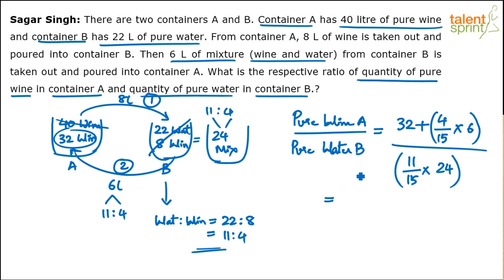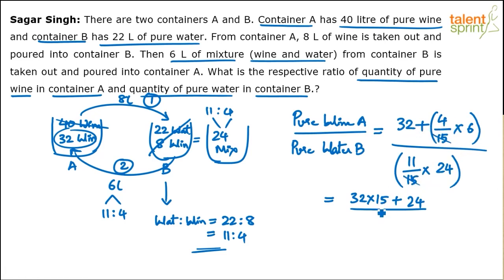To solve, multiply through by 15 to clear the denominator. The numerator becomes 32 × 15 plus 4 × 6, and the denominator is 11 × 24. So that's 480 + 24 divided by 264, which gives 504 by 264.